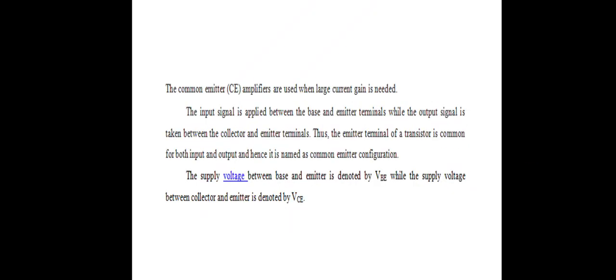Common emitter amplifiers are used when large current gain is needed. The input signal is applied between the base and emitter terminals, while the output signal is taken between the collector and emitter terminals. Thus the emitter terminal is common for both input and output, hence it is named as the common emitter configuration.